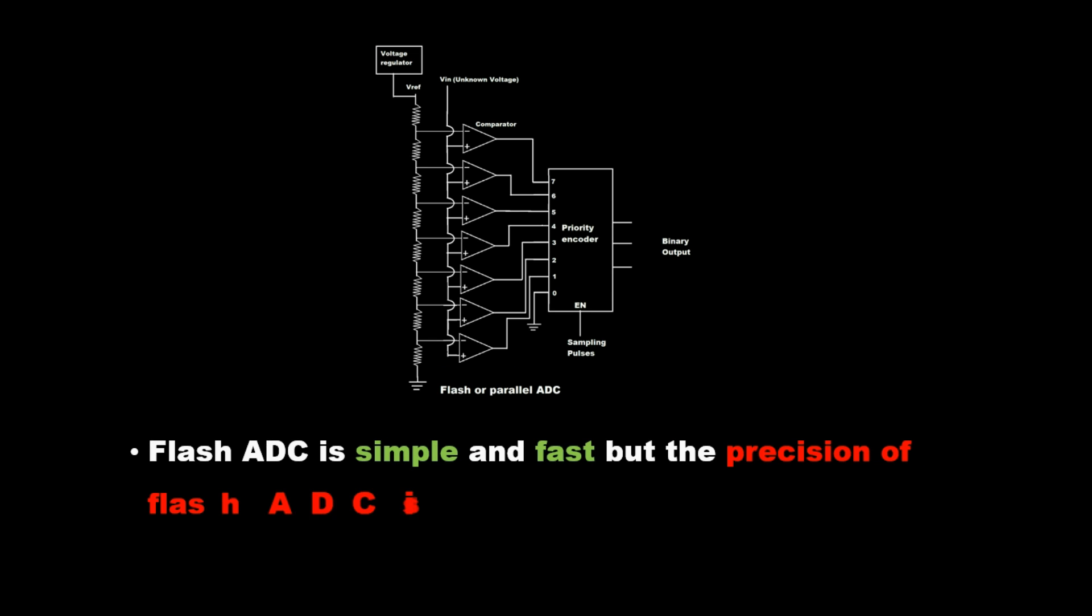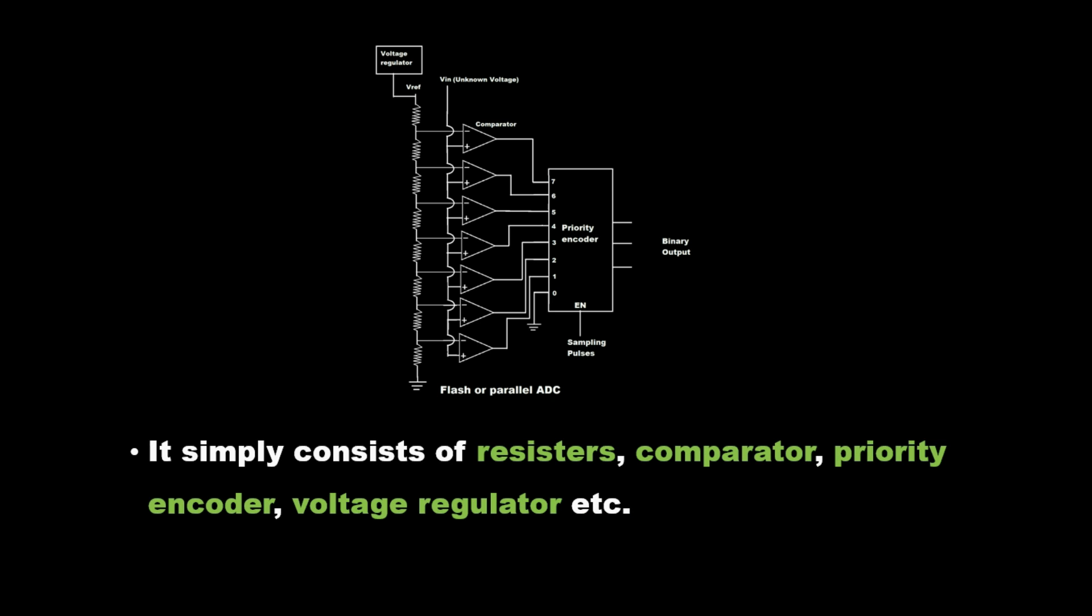Flash ADC is simple and fast, but the precision is less. Flash ADC is useful in large bandwidth applications. It consists of resistors, comparators, priority encoder, voltage regulator, etc.